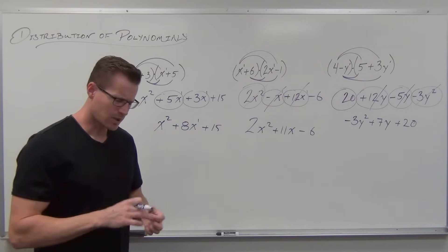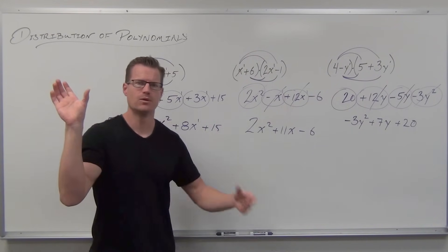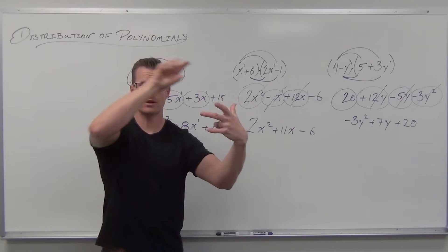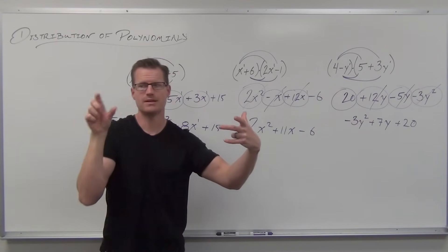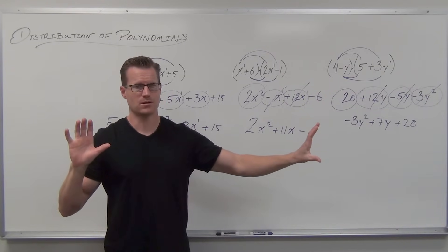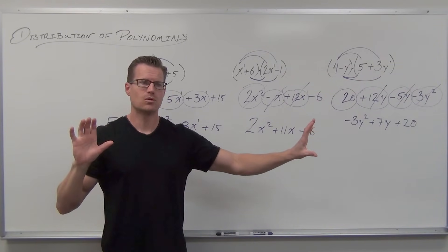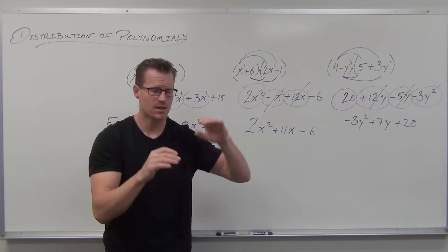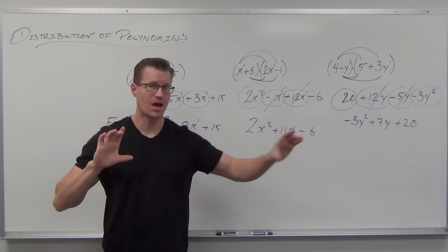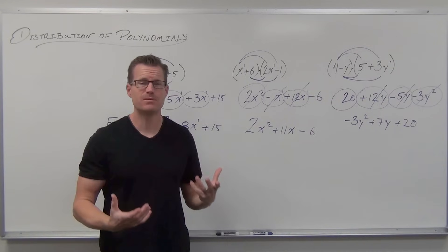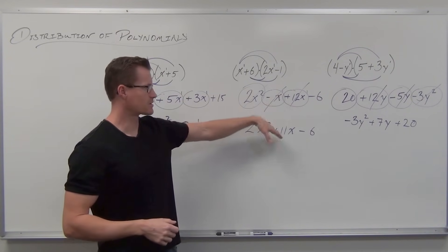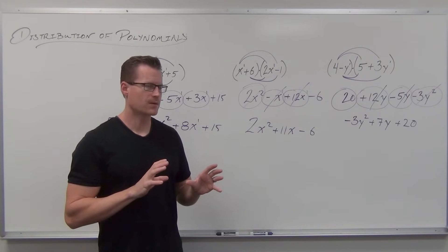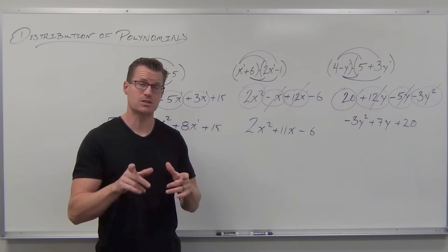Distribution of polynomials and multiplication of polynomials mean the same thing. We need to make sure every term in one polynomial gets multiplied by every term in the other. Think of each term as a little monomial that you're distributing — distribute, then the next one, distribute, and you can do this all day long. The main mistake I see is people start adding exponents when they're combining like terms, because they just did it when multiplying. In the next video we'll talk about multiplying more than two terms times more than two terms.